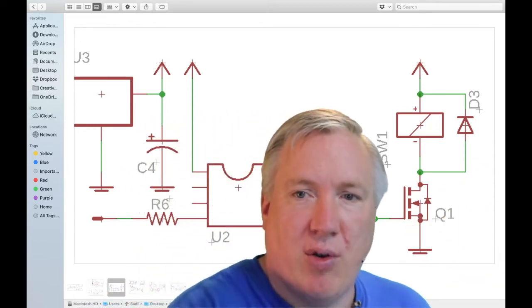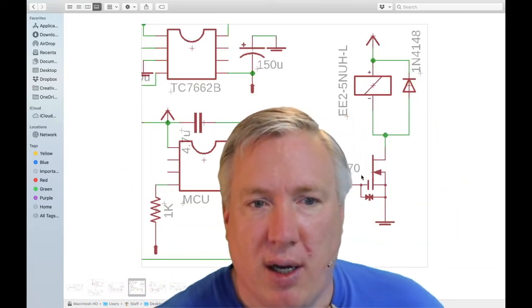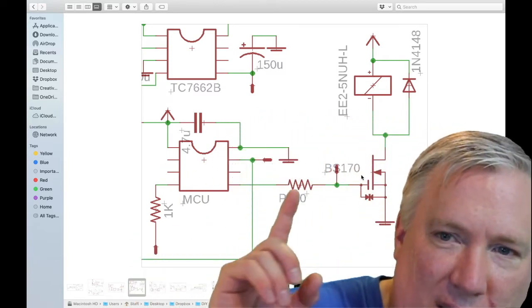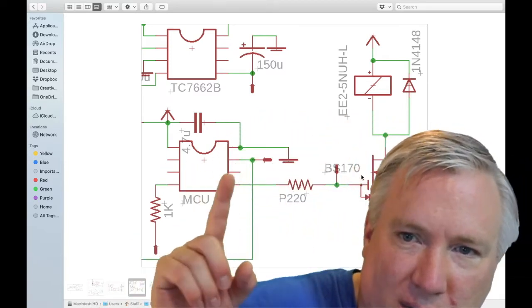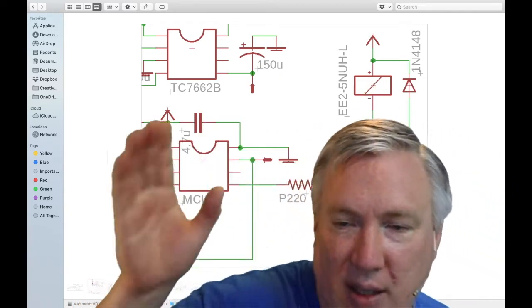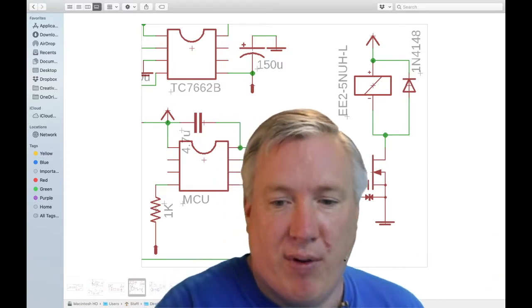So that's the switching controller here. You're going to notice it's laid out a little bit different, but it's basically the exact same thing here, right? Controller, foot switch, resistor, the MOSFET, turn on the relay. That's the part that's like identical in both of them.